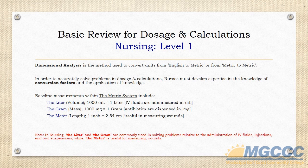The three basic units of measurement within the metric system are the liter, which measures volume; the gram, which measures mass; and the meter, which measures length. Relative to liters or volume, nurses generally use IV fluids and these are calculated in milliliters. Relative to the gram or mass, nurses typically administer medications such as antibiotics that are measured in milligrams. Relative to the meter, we generally use this to measure wounds.